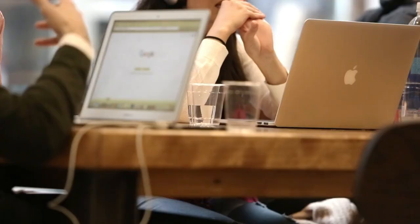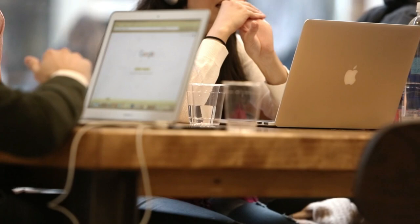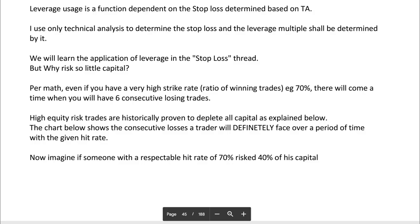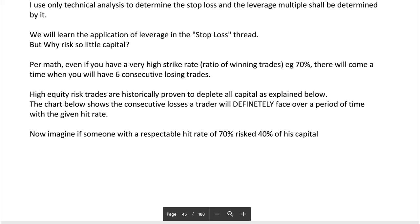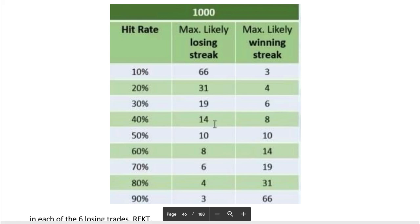But why risk so little capital — why only five percent? Even if you have a very high winning rate like 70%, there will be a time when you face six consecutive losing trades. High equity risk trades are historically proven to deplete all capital. As you can see in this chart, it shows the consecutive losses a trader will definitely face over a period of time with a given hit rate.